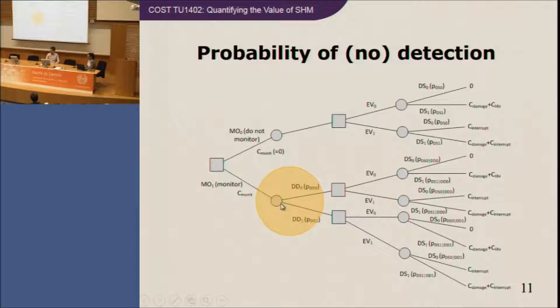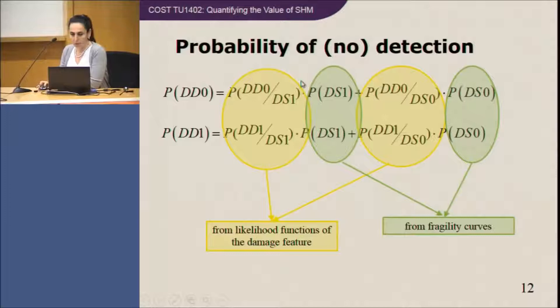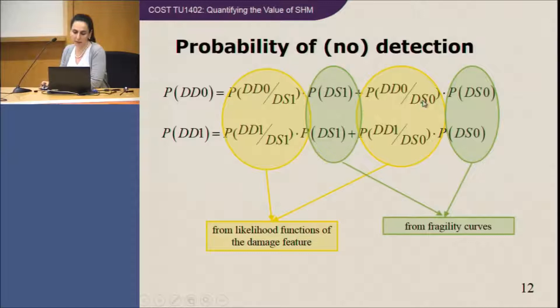Damage detection can be expressed in terms of the likelihood function of a chosen damage feature, which could be a model parameter such as the frequency or period. The prior probabilities can be calculated and estimated from the fragility curves. The usual likelihood functions are: the probability that damage is not detected given damage exists, the probability of damage being detected given damage exists, damage not being detected given damage does not exist, and the probability of damage being detected when it does not exist.